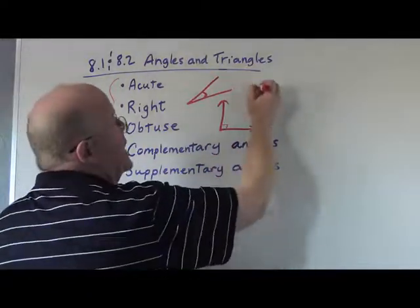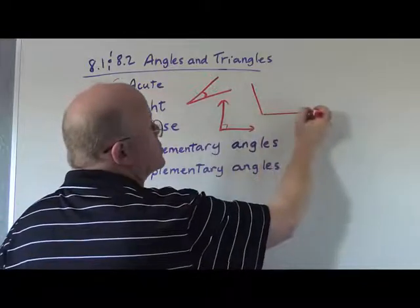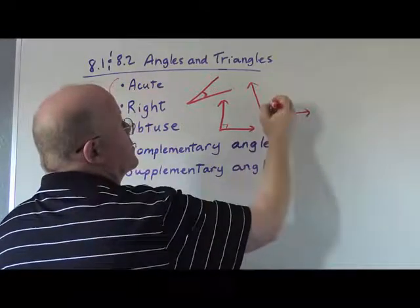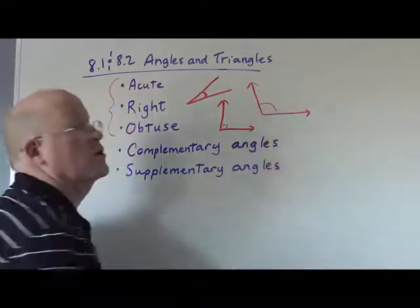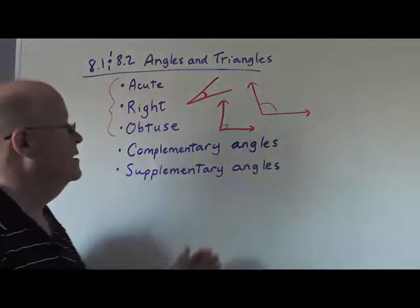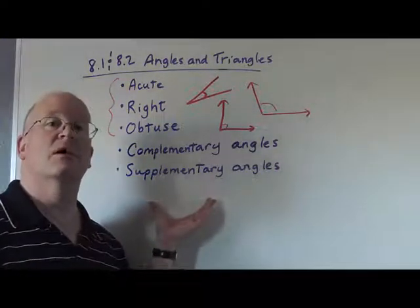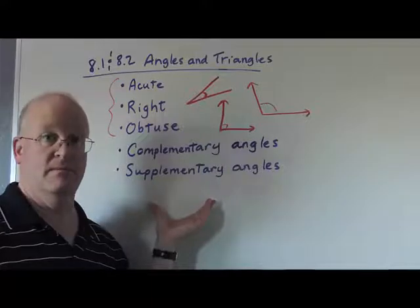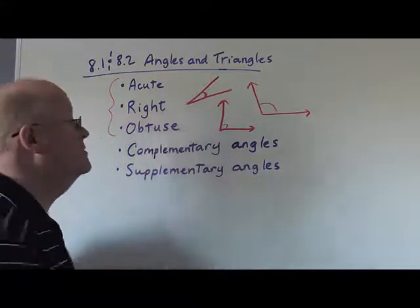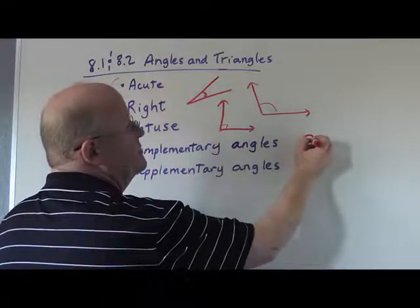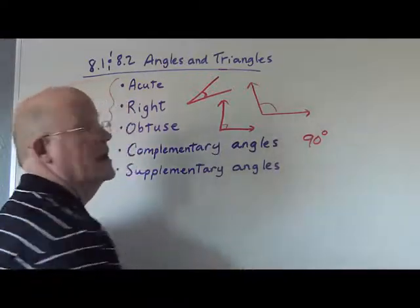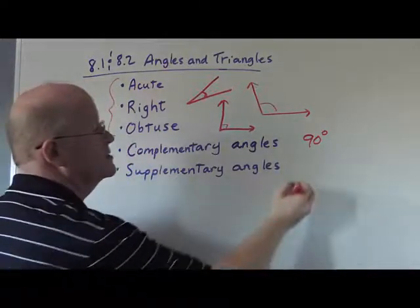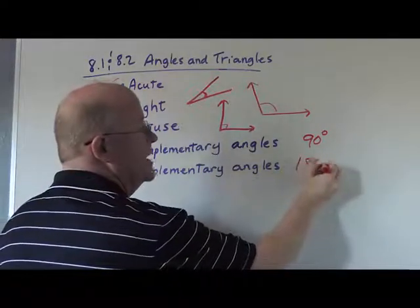An obtuse angle is one that measures more than 90 degrees and it's open rather wide. Now we also refer to complementary and supplementary angles.